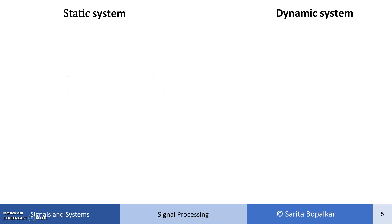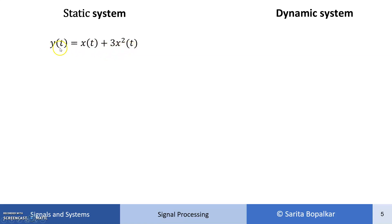Let's take more examples of static systems. For a continuous time static system: y(t) = x(t) + 3x²(t). Here, the present output depends upon only the present input. For example, at t = 0, y(0) = x(0) + 3x²(0), so t remains the same for input and output. The present output depends upon the present input only, not on any previous output or previous input.